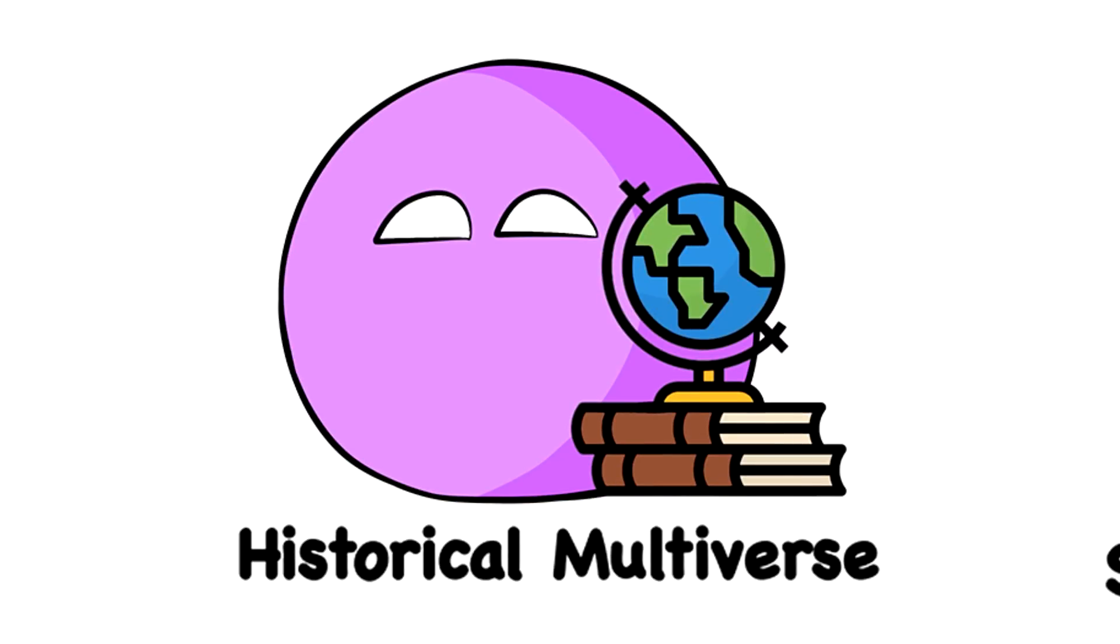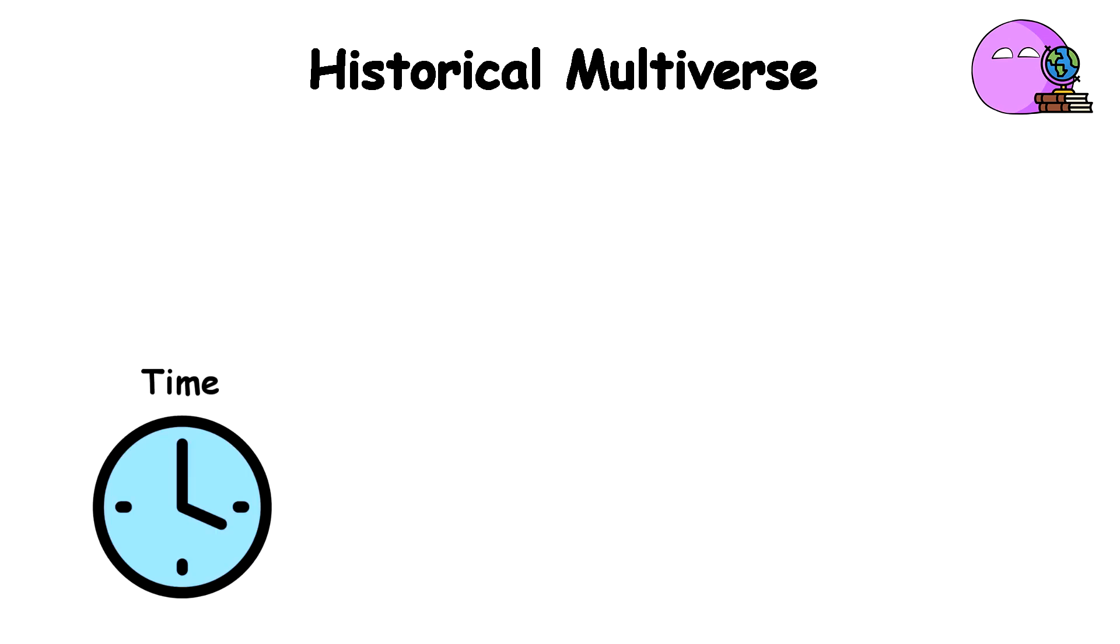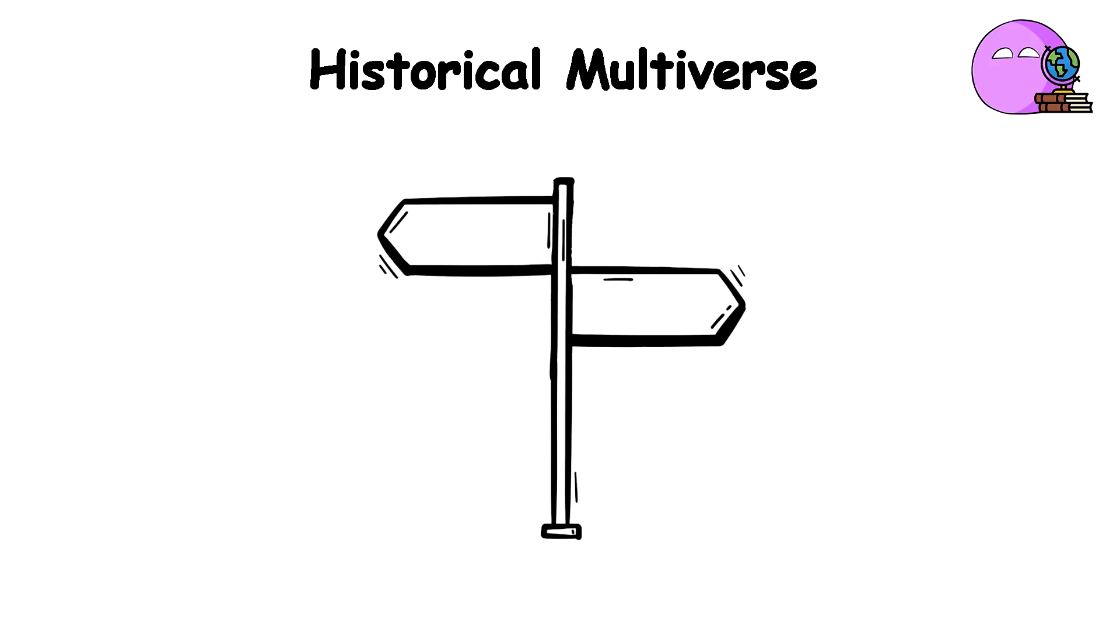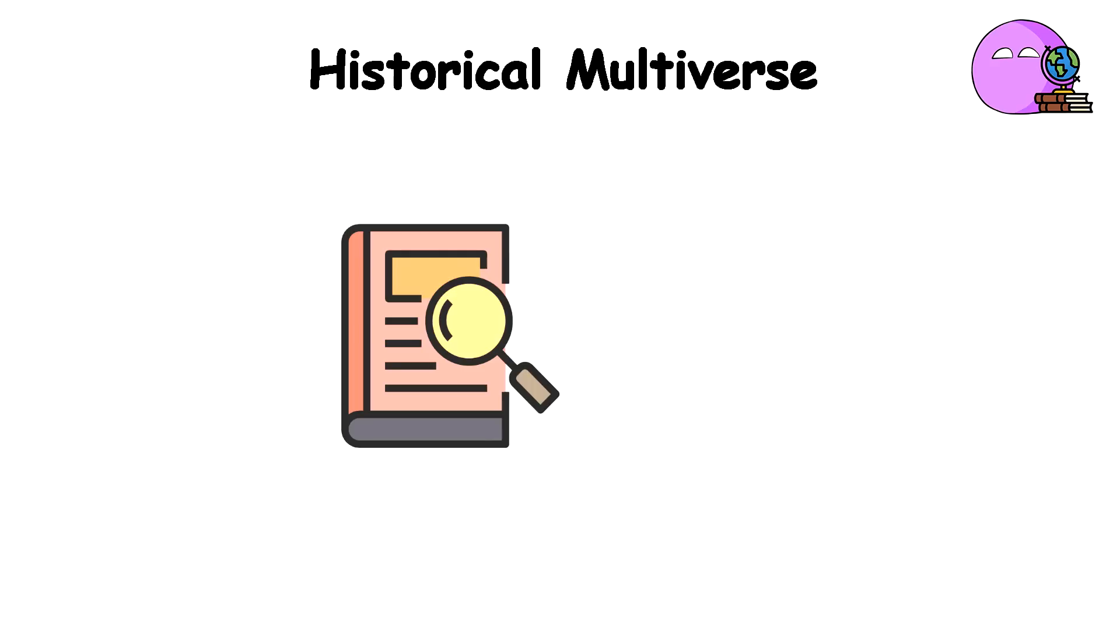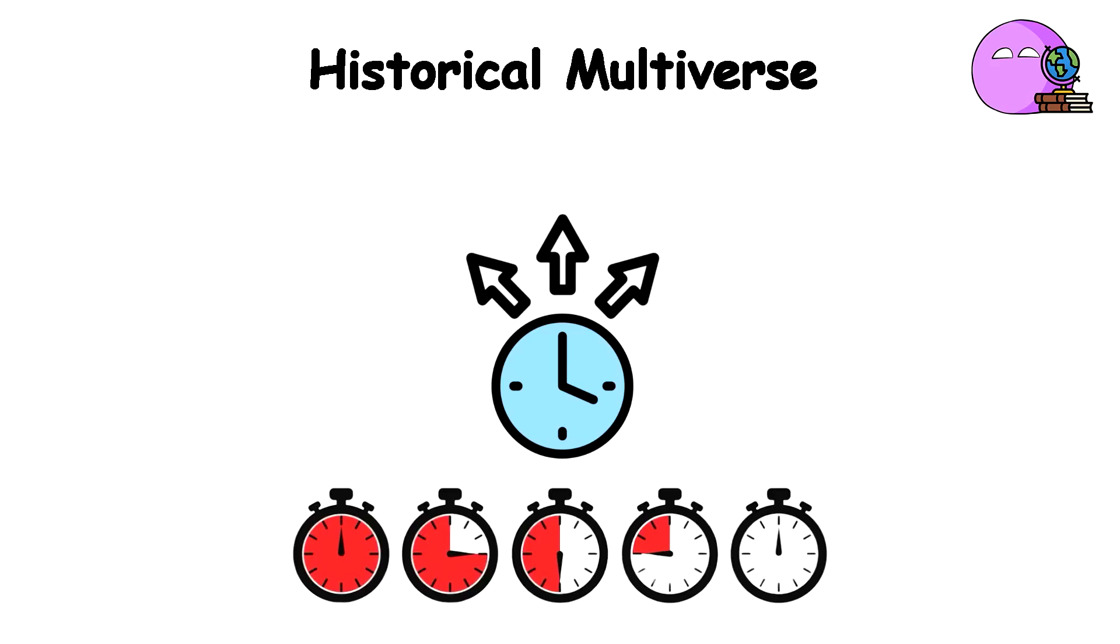Historical Multiverse. The historical multiverse suggests that time itself may have a multiverse structure. We experience time flowing in one direction, from past to future, but some theories propose time can branch. At different events, time splits into multiple paths. Each path represents a different timeline, a different history unfolding.